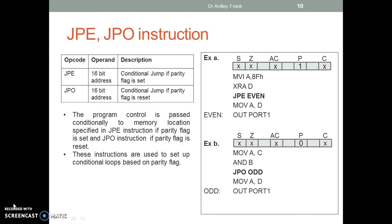JPE and JPO instructions: JPE is a conditional jump if the parity flag is set. JPO is a conditional jump if the parity flag is reset. The program control is passed conditionally to the memory location specified in JPE or JPO based on the parity flag. These instructions are used to set up conditional loops based on the parity flag. Example: JPE jumps to label 'even' if the parity flag is set; JPO jumps to label 'odd' if the parity flag is reset.